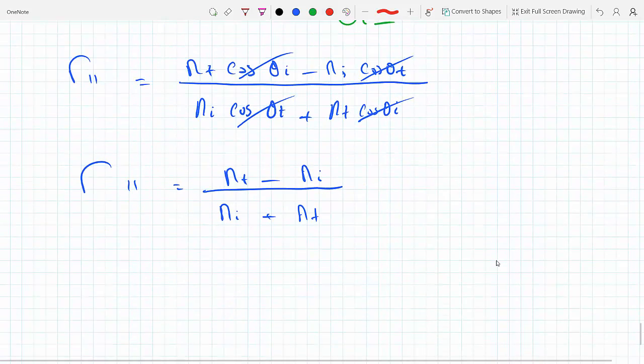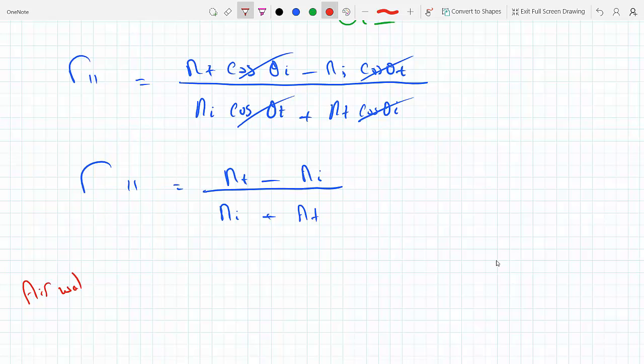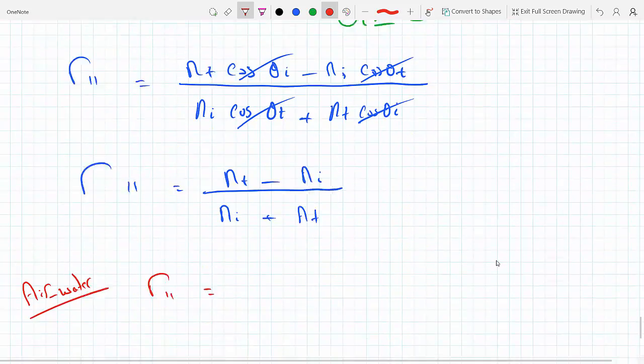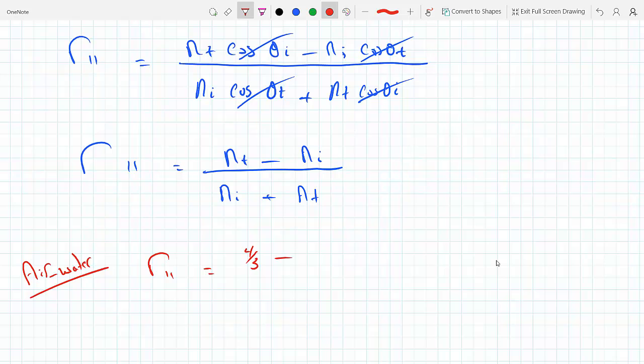So now if I consider the case for air-water, we have r_parallel equals - we're transmitting through water here - so (4/3 - 1)/(4/3 + 1). So what's that? One-third over seven-thirds, so that's one-seventh, which is almost 0.14.